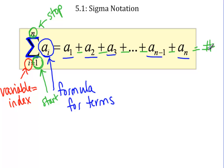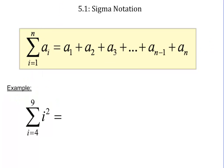I acknowledge that that was very confusing, so let's do an example. Say it says i goes from 4 to 9 of i squared. What does that mean?